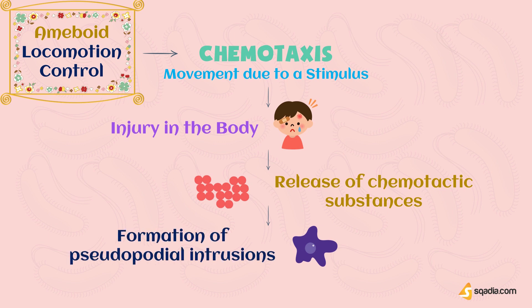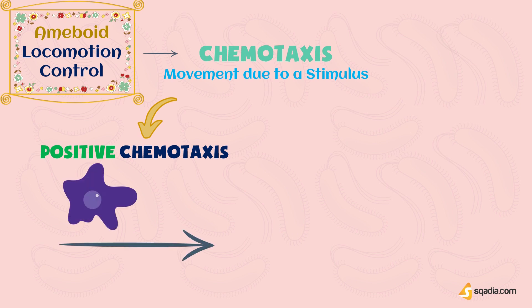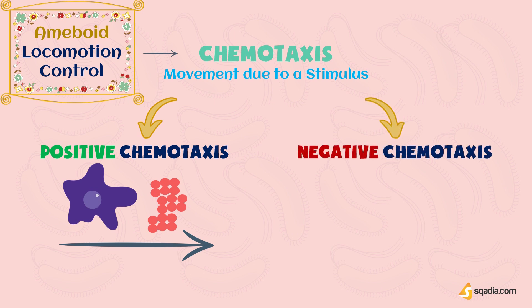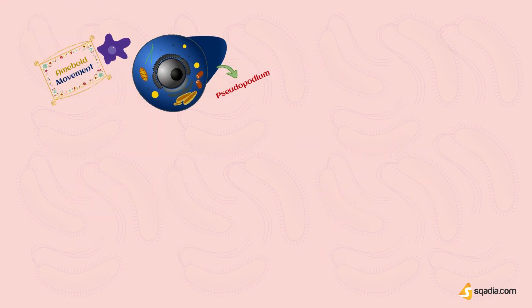This happens due to formation of pseudopodium, and its medical term would be pseudopodial intrusions. There are two types of chemotaxis. Positive chemotaxis is the movement of cells from a lower concentration to a higher concentration. Negative chemotaxis is the movement of cells from a higher concentration to a lower concentration.